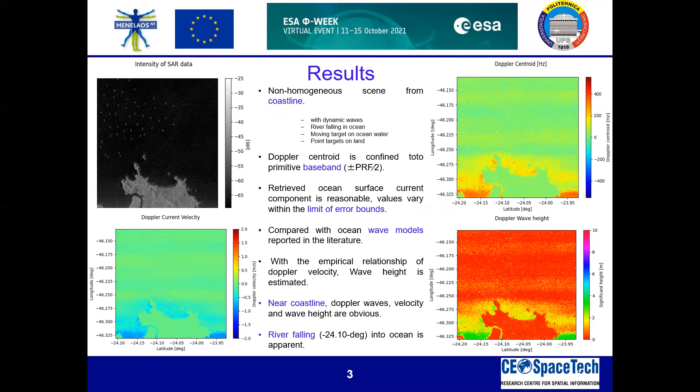On the right-hand side bottom, we have Doppler wave height, which has been calculated with the empirical relationship of Doppler velocity. We can observe that near the coastline, Doppler velocity and wave heights are very obvious. Near the 24.10 degree latitude, we can also observe a river falling into the ocean, which is also very apparent.